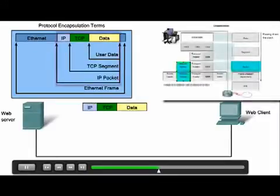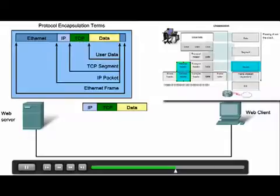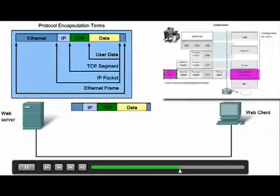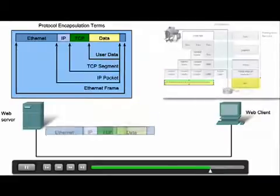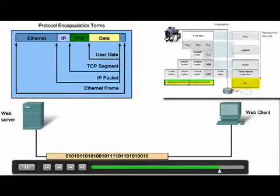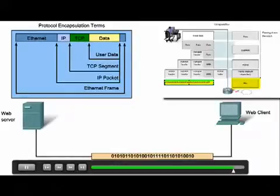The transport layer then sends the segment to the internet layer where the internet protocol is used. Here, the entire TCP segment is encapsulated within an IP packet, which adds another label called the IP header. The IP header gives the packet traveling directions by adding source and destination host IP addresses. Next, the IP packet is sent to the network access layer where it is encapsulated within a frame header and trailer. Each frame header contains a source and destination physical address, and the trailer contains error checking information.